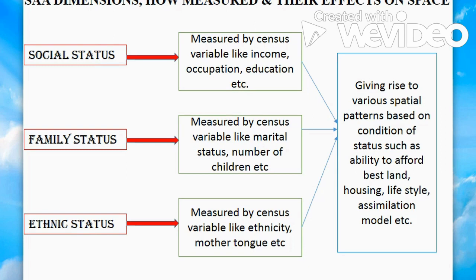In SAA, Shevky and Bell used census data — also called census tracts — because they were working with very large datasets. For family status, census variables included number of children, age and gender ratio, marital status, number of persons per household, and type of vehicles. For ethnic status, the variables included ethnicity, mother tongue, country of origin, length of residency, and movement patterns — since this dealt with immigrant populations.